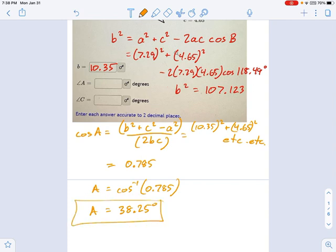But in the end, what you're going to get is angle A equals 38.25 degrees. So that's the way you approach this thing.